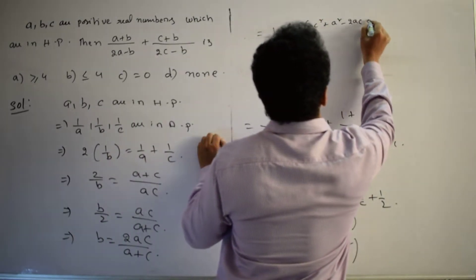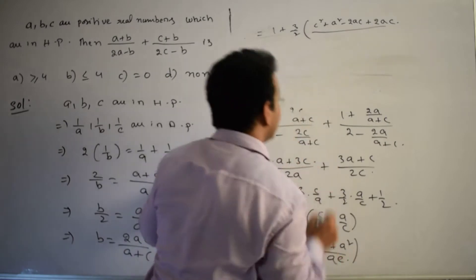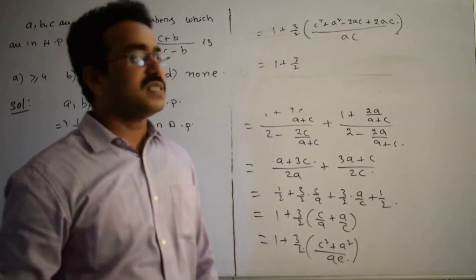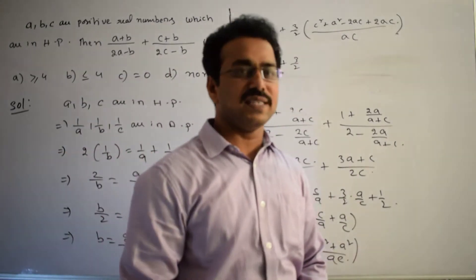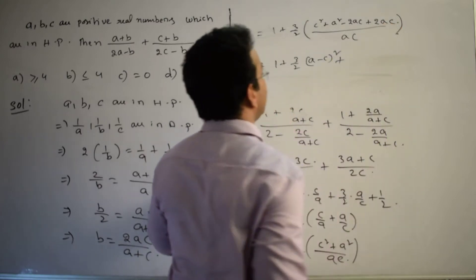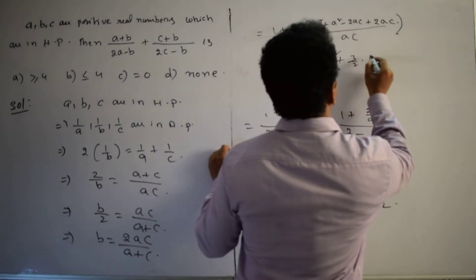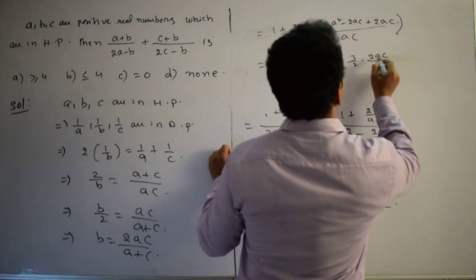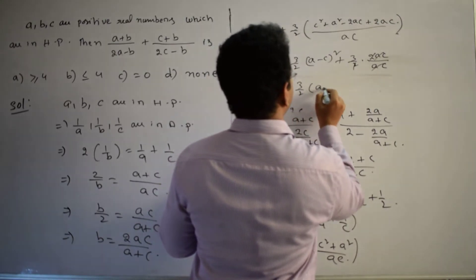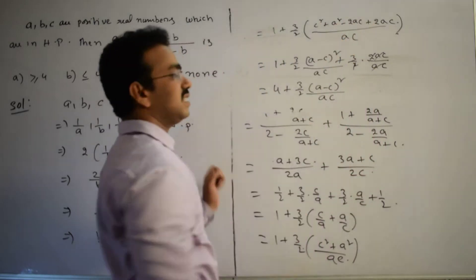We add and subtract 2AC to get the required square form. This equals 1 + (3/2) × [(C² + A² - 2AC + 2AC) / AC], which equals 1 + (3/2) × [(A - C)² / AC + 2]. Simplifying: 2AC/AC gives 2, so we get 1 + 3 + (3/2) × (A - C)²/AC, which equals 4 + (3/2) × (A - C)²/AC.